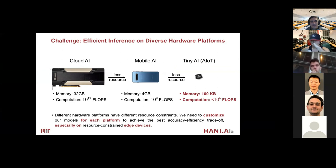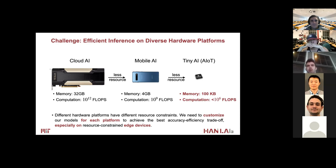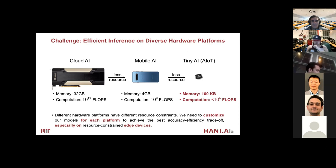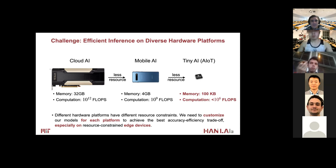For example, for GPU devices — the V100 GPU has 32 gigabytes of memory and a very large number of computation FLOPs — whereas resource-constrained mobile devices and even tiny devices have orders of magnitude lower computation and memory. So it is very critical to customize neural networks to fit different hardware platforms to achieve the best trade-off between accuracy and efficiency, especially when constrained in terms of resources.